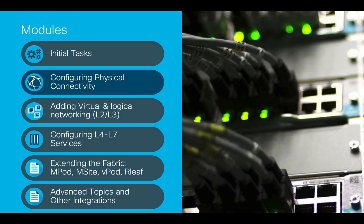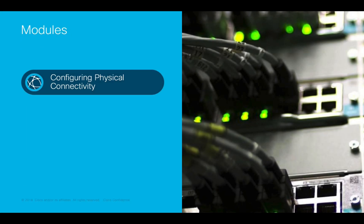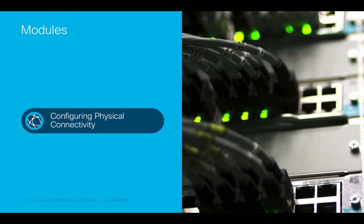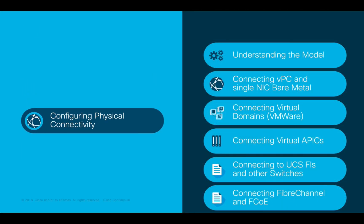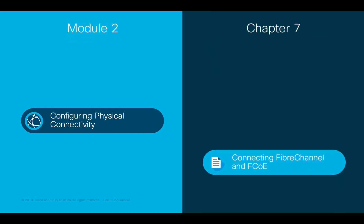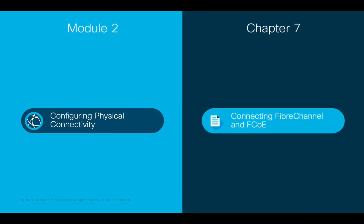Welcome to ACI, the Network Made Simple learning series. In this video we will cover Module 2, Configuring Physical Connectivity, Chapter 7, Connecting Fiber Channel and FCoE.